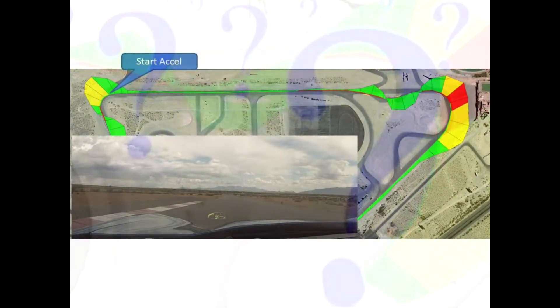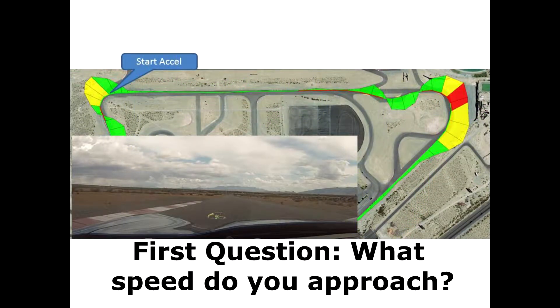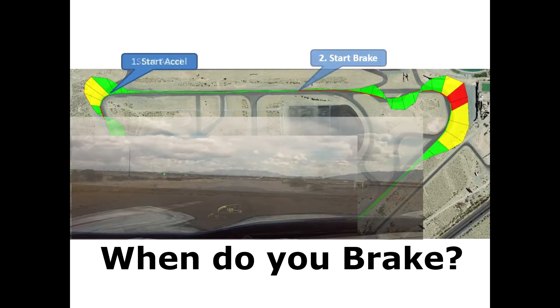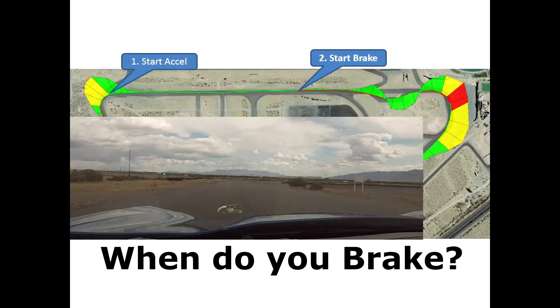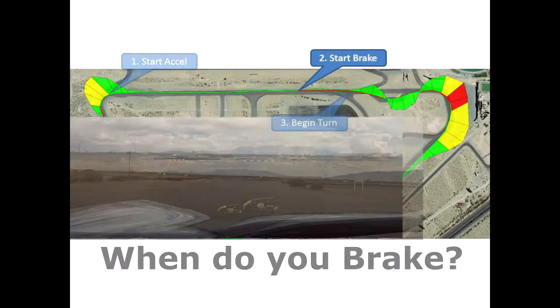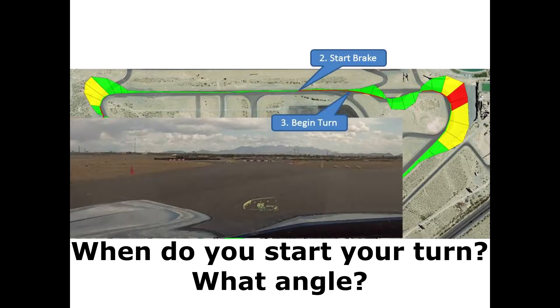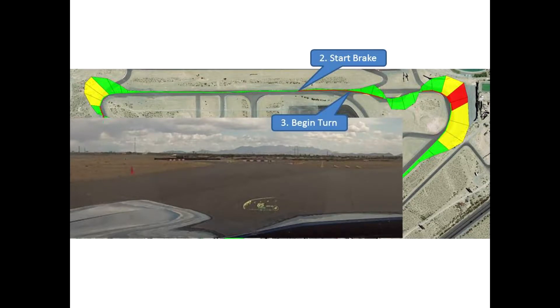The first question is the start of the acceleration down the back straight. Get your best speed down here because this speed is going to determine the rest of the course in this section. The second question is when do you start your brake? And the third question is, when do you bring your turn at what angle to properly hit the bus stop turn?